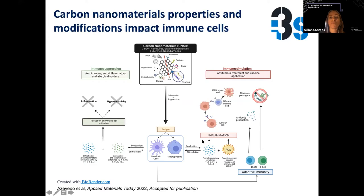Carbon materials are starting to be explored for their impact on immune cells and for modifying them in a way that can condition the immune response, either by absorbing drugs, antibodies, or peptides. They can be tailored to activate cells of the immune system towards an inflammatory response to fight tumors, as vaccines, or towards an immunosuppressive response when we need to fight autoimmunity.